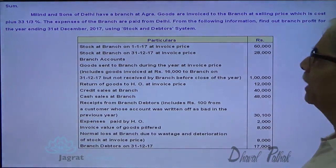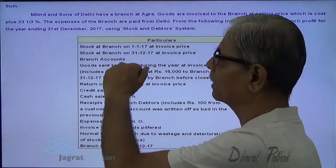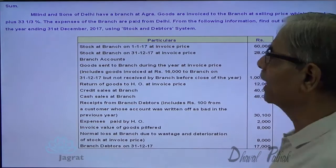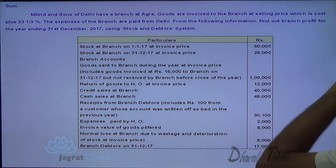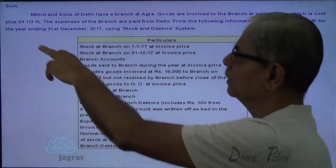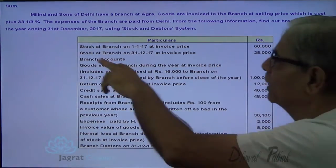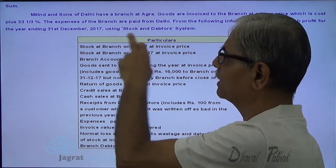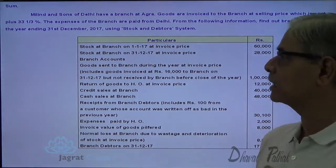Millennium and Sons of Delhi have a branch at Agra. Goods are invoiced to the branch at a selling price which is cost plus 33 and one-third percent. The expenses of the branch are paid from Delhi. Find out branch profit for the year ended 31st December 2017 using the stock and debtors system.